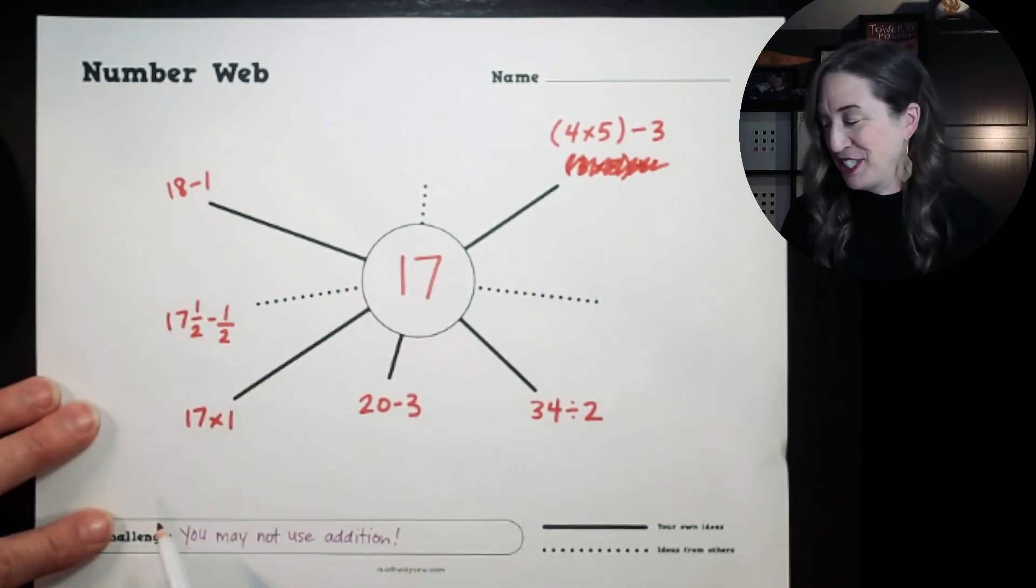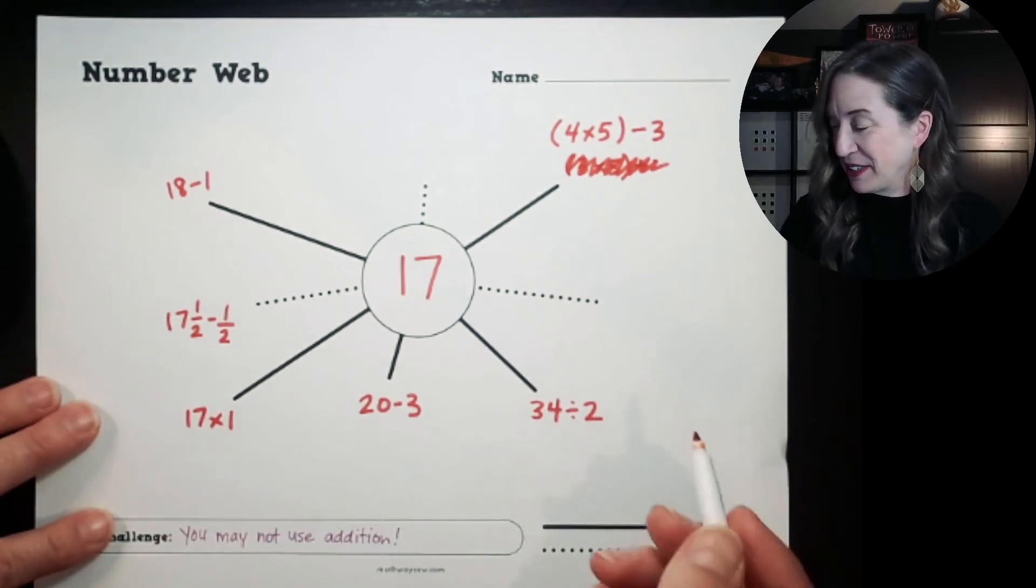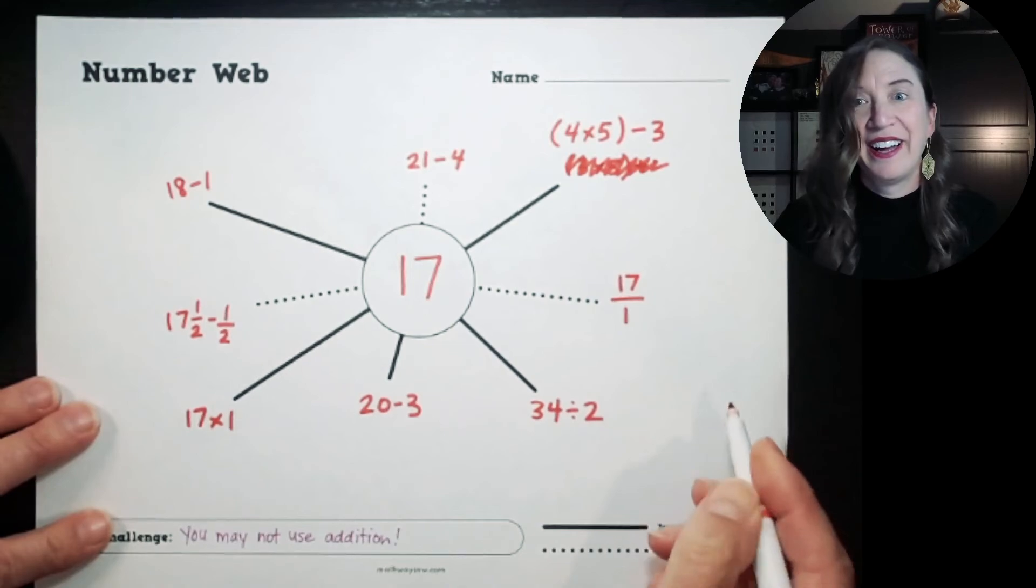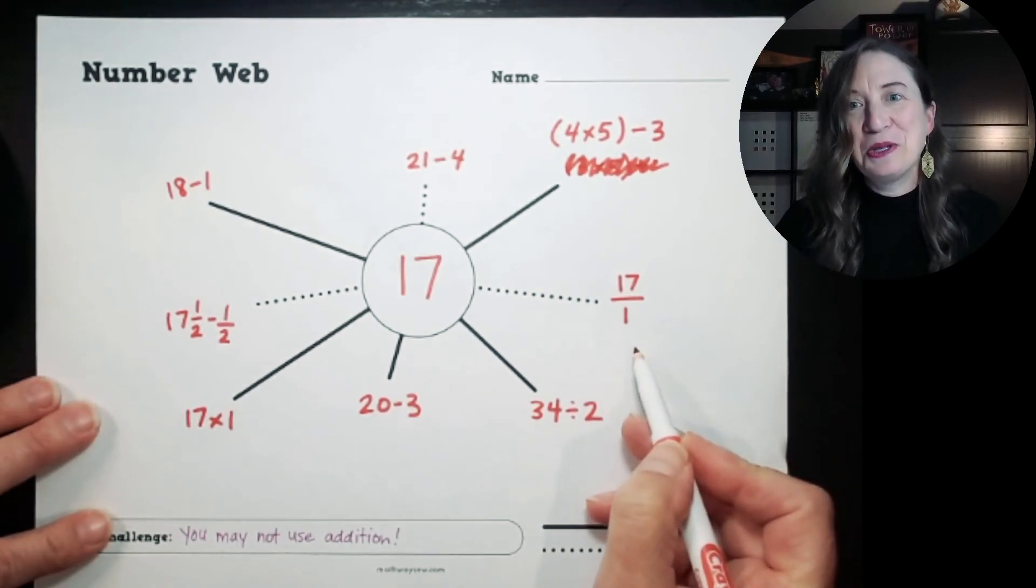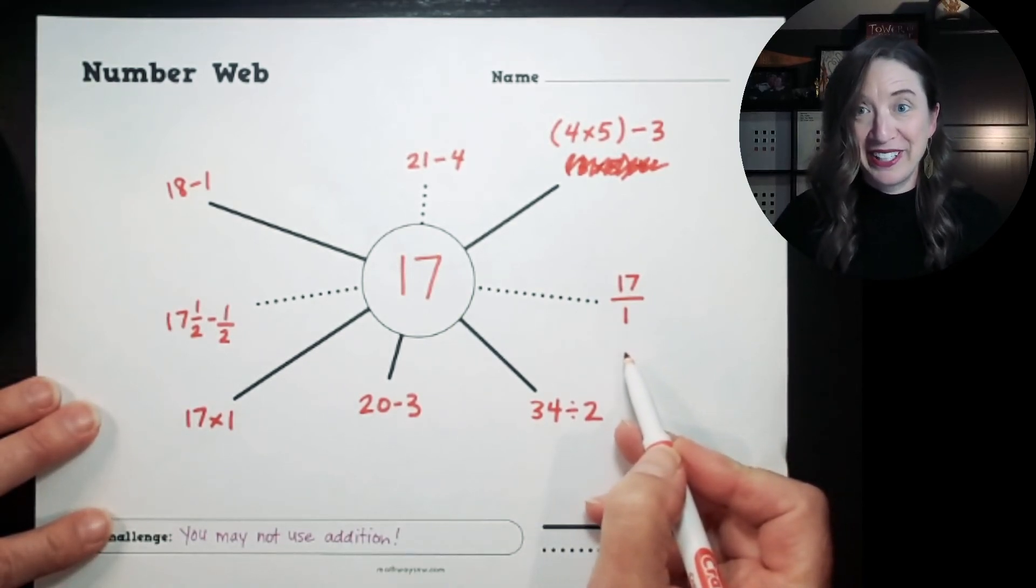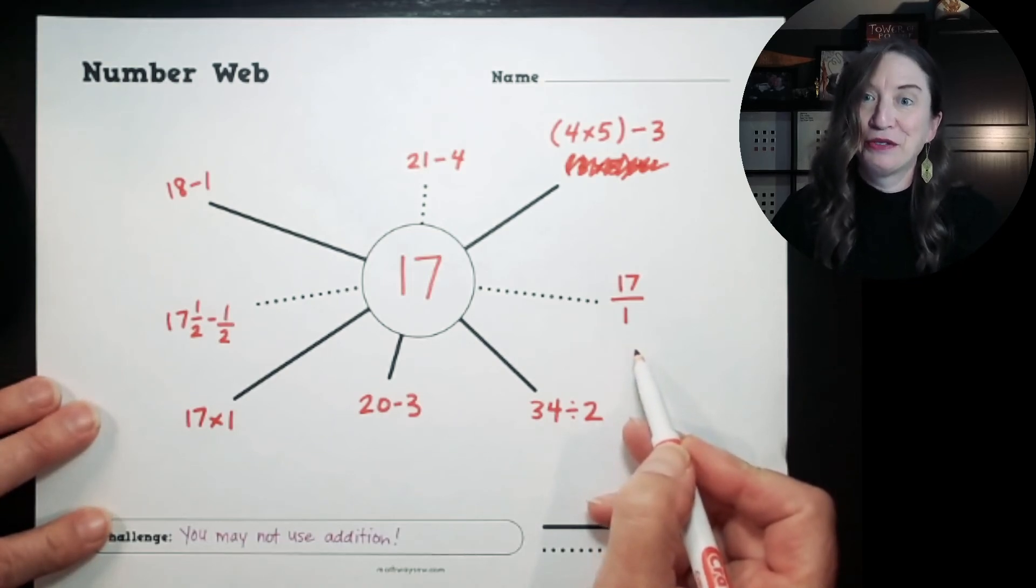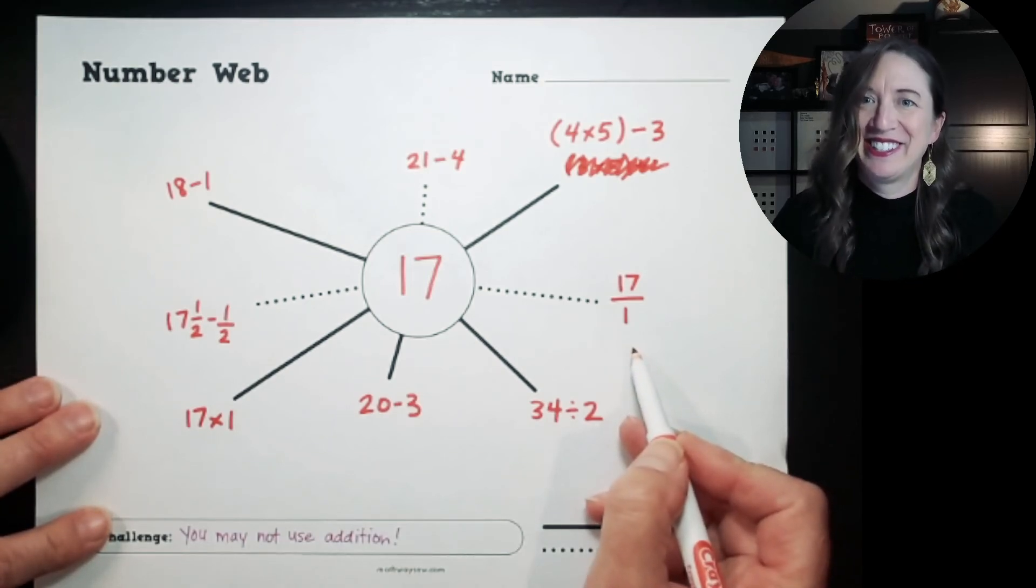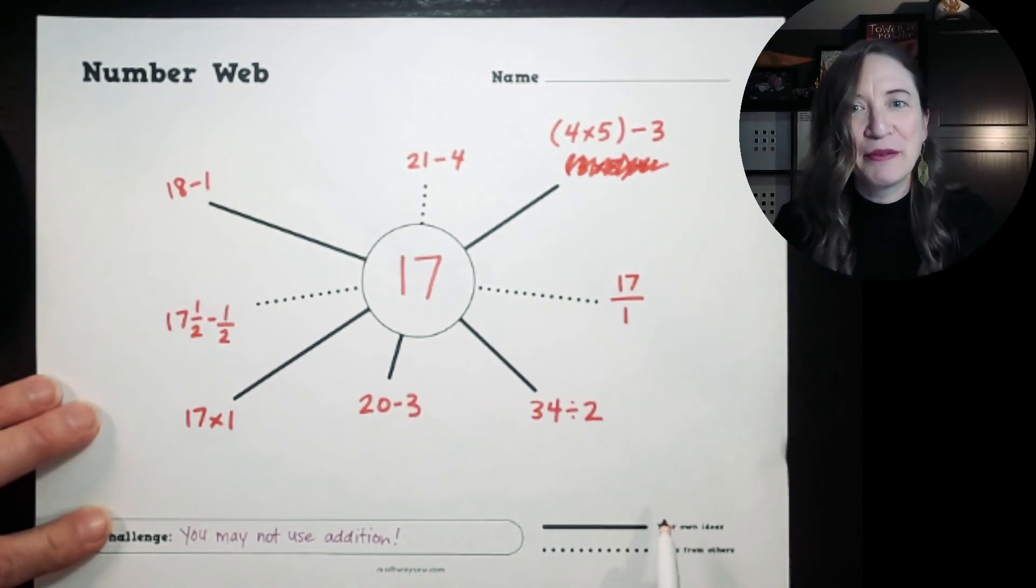Good job, friend. I appreciate that. Let's see what else. And this last friend knew that any number over one as a denominator is itself. 17 over one is the same as 17. So good job, friends.